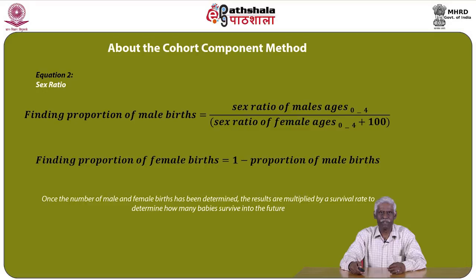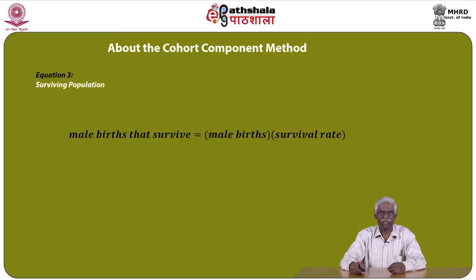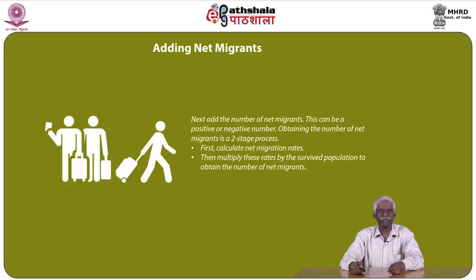The second equation focuses on sex ratio. The proportion of male births equals the sex ratio of males ages 0 to 4, divided by the sex ratio of females ages 0 to 4, plus 100. The proportion of female births equals 1 minus the proportion of male births. Once male and female births are determined, the results are multiplied by a survival rate to determine how many babies survive into the future. Male births that survive equals male births multiplied by the survival rate.